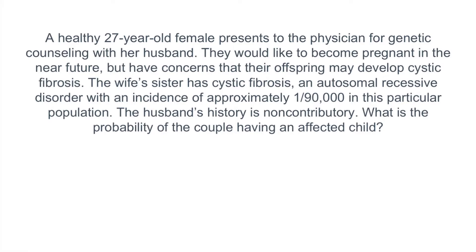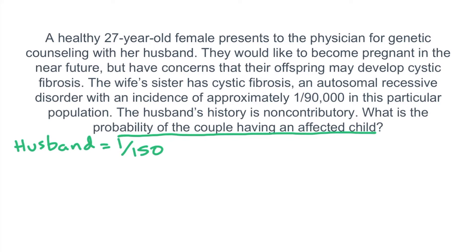Let's do another question — a continuation of the previous one. This time we're asked to determine the probability of the couple having an affected child. We know the probability of the husband being a carrier is about 1 over 150. We also need to know the probability of the wife being a carrier, and it can be useful to draw out a pedigree and a Punnett square.